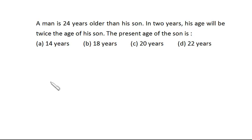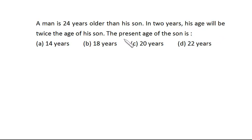Let's solve this question: a man is 24 years older than his son. In two years, his age will be twice the age of his son. What is the present age of the son? Suppose this is the man and this is his son.